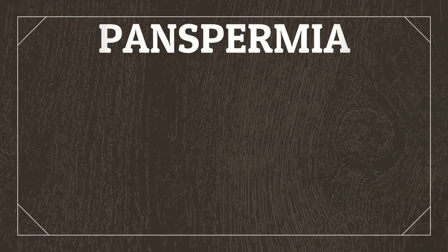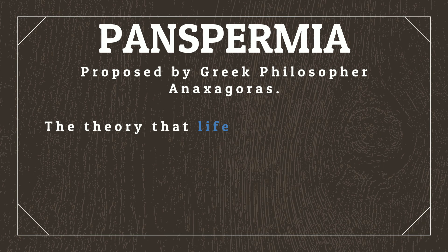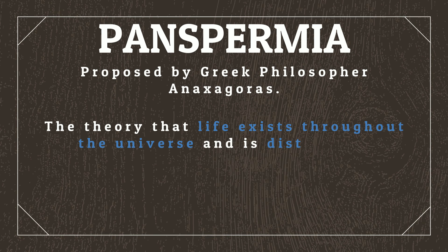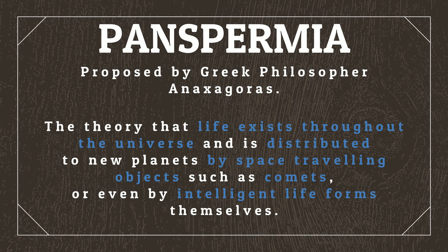Another hypothesis of the origins of life is called the Panspermia Hypothesis, proposed by Greek philosopher Anaxagoras — which is just about the coolest name I've ever heard. Panspermia is the theory that life exists throughout the universe and is distributed to new planets by space-travelling objects such as comets, or even by intelligent life forms themselves. The problem with Panspermia as a life-origin theory is that it doesn't actually answer the question of how life was first created; it simply moves the question off the planet and takes it elsewhere in the universe.